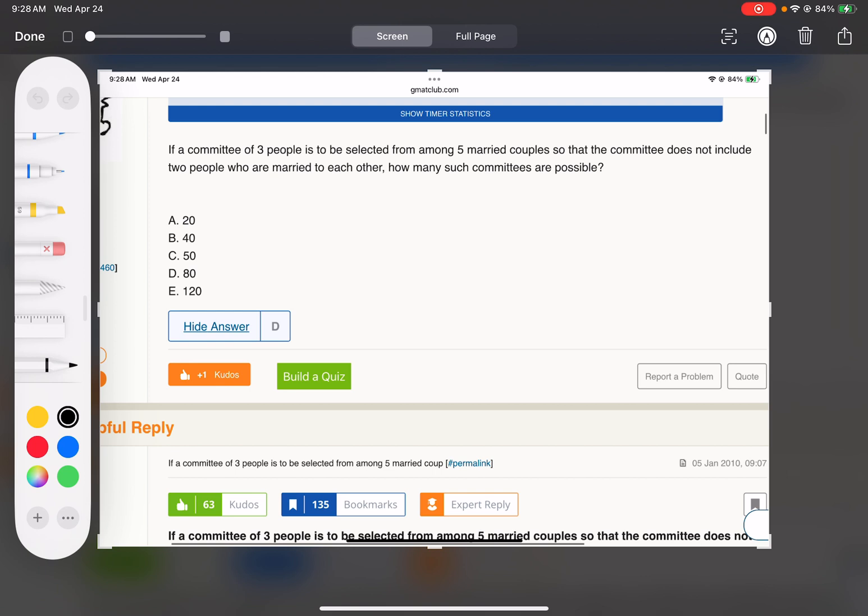The standard way to do this is to do the total ways there are of picking a three-person committee minus the number of committees that do have a married couple.